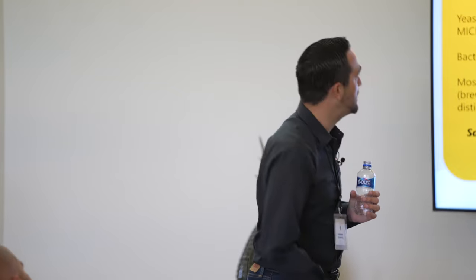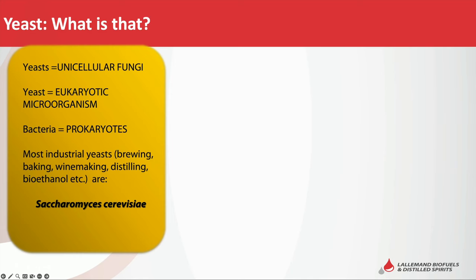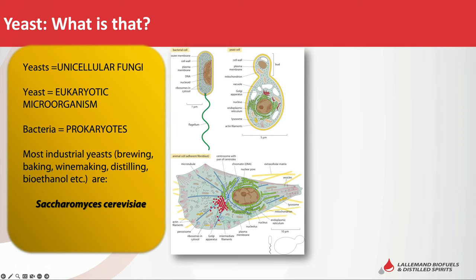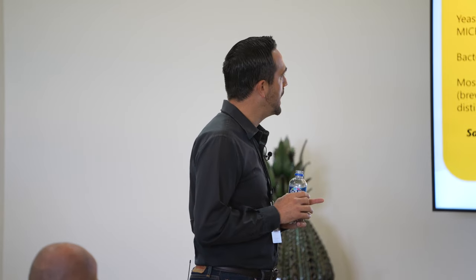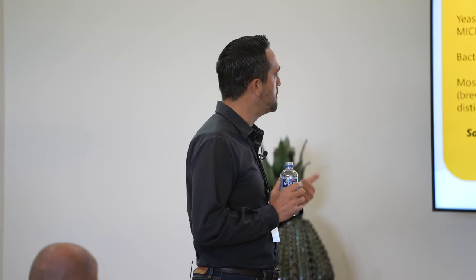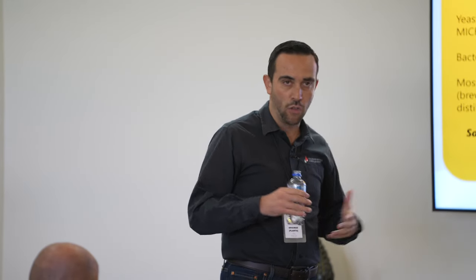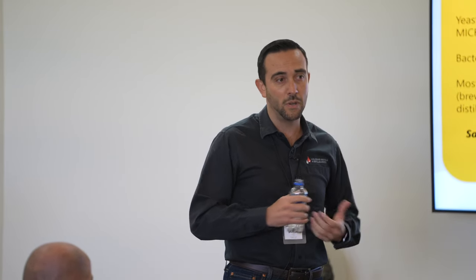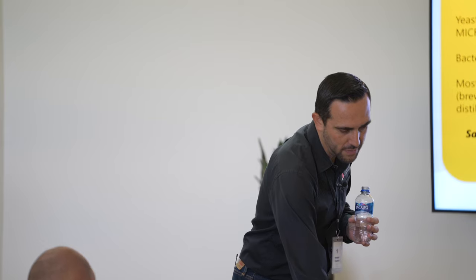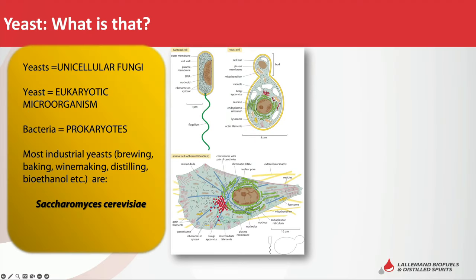So what is the Giz? It's a unicellular fungi, a eukaryotic microorganism. The big difference between the Giz and bacteria is the size, but the yeast is an entire microorganism while bacteria is more dependent on the medium. Most industrial yeast in brewing, baking, winemaking, distilling, bioethanol, and others is the genus and species Saccharomyces cerevisiae — the most common and most studied by humans.